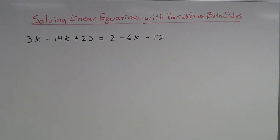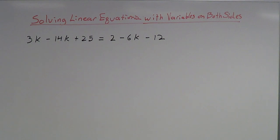In this video, I'm going to talk about solving linear equations with variables on both sides. Sometimes when you have equations and you're solving, you're going to have variables on the left and on the right side of the equal sign. The most important thing to know when solving these types of equations is that you just need to gather everything together — gather all the variables together, gather all the numbers together.